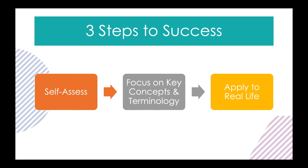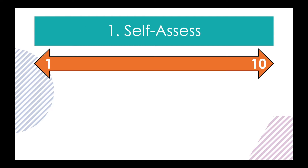So let's talk about the first part of the process, which is self-assessment. On the following slides, we're going to look at the main topics of the technology module. As we go through them, I want you to consider your comfort level with them on a scale from one to ten, where one is 'I have no idea what this even means' and ten is 'I'm already an expert at this.' To help in your self-assessment process, you may also want to consider these questions.